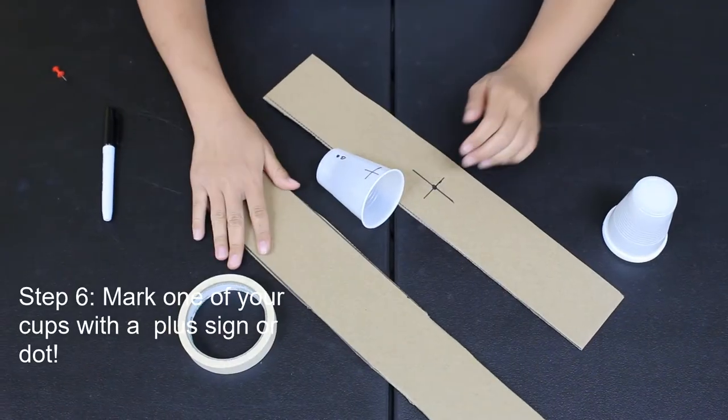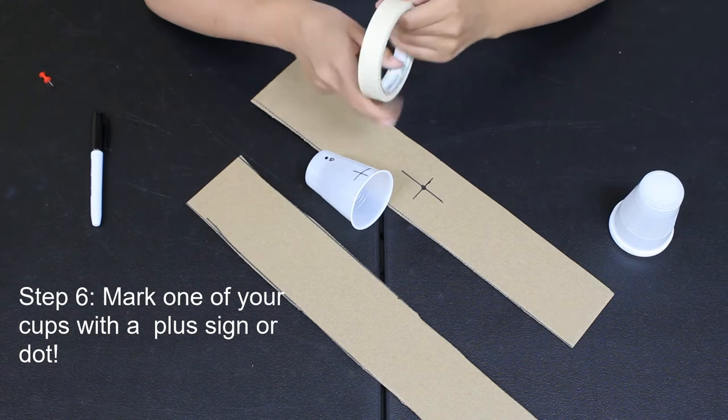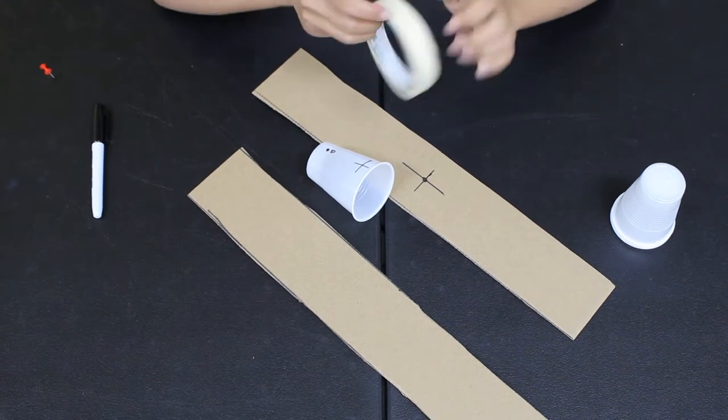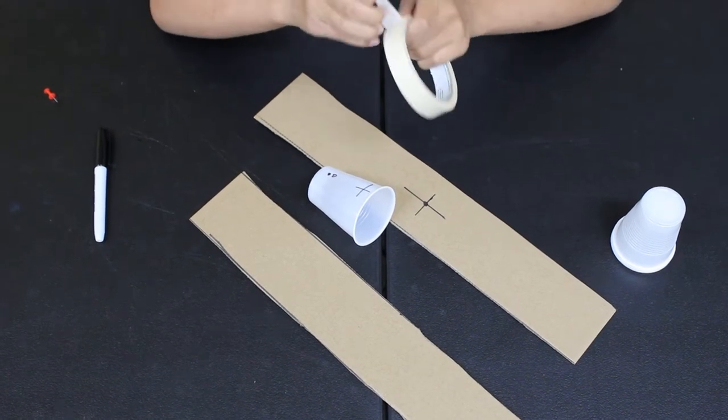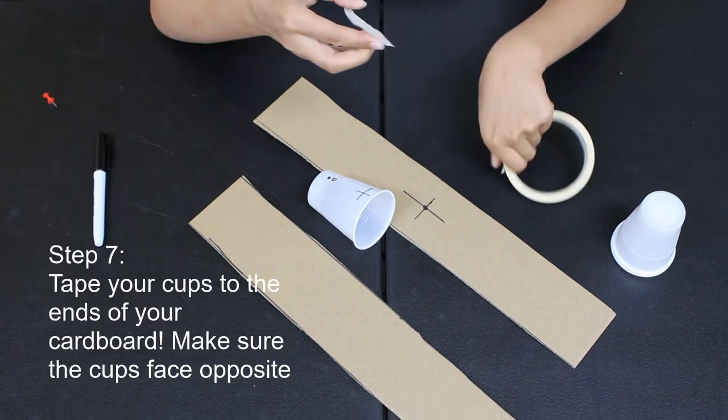Get your four plastic cups and mark one as your special cup. Draw a plus sign, a heart, a square—whatever you need to know that's your special cup.